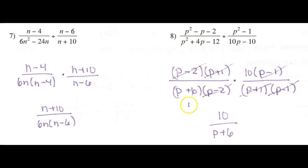This quadratic, which is going to factor p plus 6, p minus 2. I'm going to have to take the reciprocal of this since I'm dividing. And I'll be able to factor out a 10 in the numerator to get p minus 1.